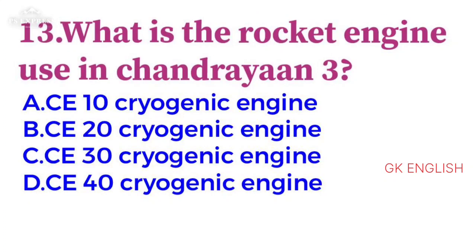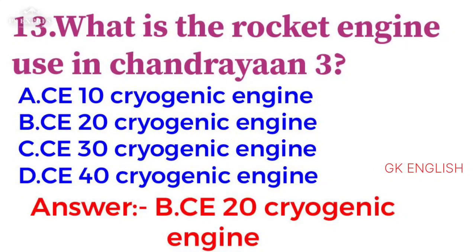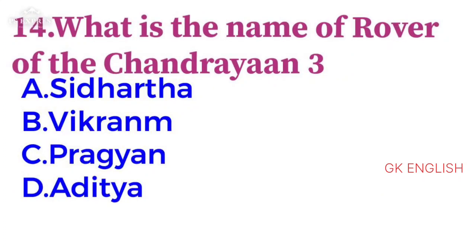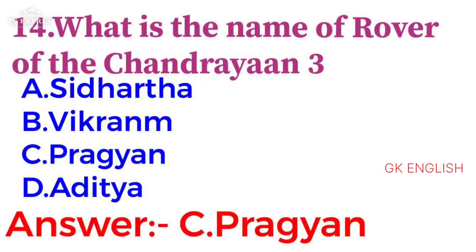The next question: What is the rocket engine used in Chandrayaan-3? The answer is option B: CE-20 cryogenic engine. The next question: What is the name of the rover of Chandrayaan-3? The answer is C: Pragyan.